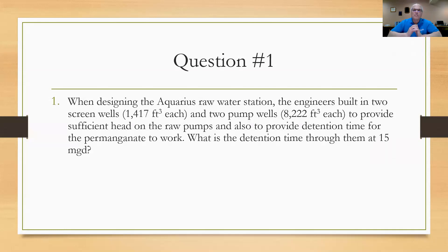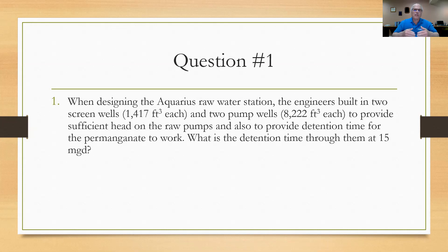Question number one: When designing the Aquarius Rural Water Station, the engineers built in two screen wells and two pump wells. You see the volume of each, to provide sufficient head on the raw water pumps and to provide detention time for the permanganate to work. The Aquarius plant has a remote raw water station that sits right on Lake Erie. Water comes in from the intake and before the screens you're able to add potassium permanganate. Each screen well is 1,475 cubic feet and each pump well is 8,222 cubic feet. What is the detention time through them at 15 MGD?